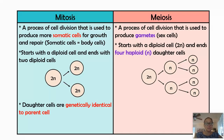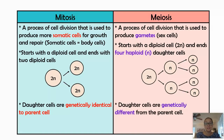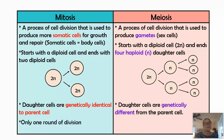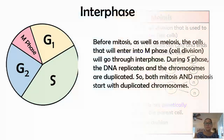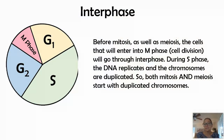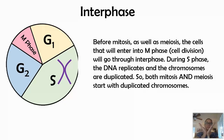The daughter cells in mitosis are genetically identical to the parent cell, unless there are mutations. But the daughter cells in meiosis are on purpose genetically different from that parent cell. Mitosis has one round of division whereas meiosis has two. Before either process can start, there's interphase as part of the cell cycle, and in both types of division during S phase, the DNA is going to duplicate — so you will see duplicated chromosomes in both mitosis and meiosis.